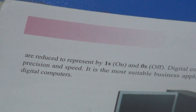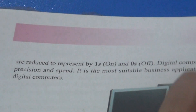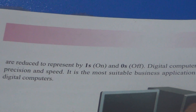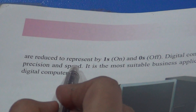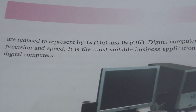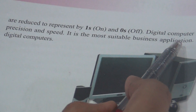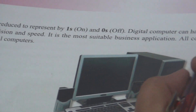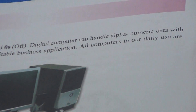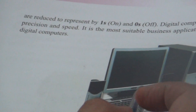Numbers and special symbols are reduced to be represented by one and zero. Ismein on aur off ke liye do numbers use ki jaati hain — binary form use ki jaati hai, that is one and zero. Digital computers can handle alphanumeric data with precision and speed. Digital computer koi bhi data — alphanumeric, yani numbers ya alphabet form mein — usko accuracy aur speed ke saath result deta hai. It is the most suitable for business applications. All computers in our daily use — including laptops — are Digital computers.